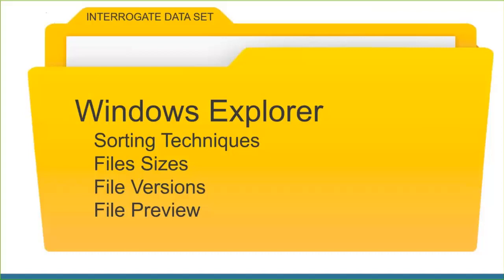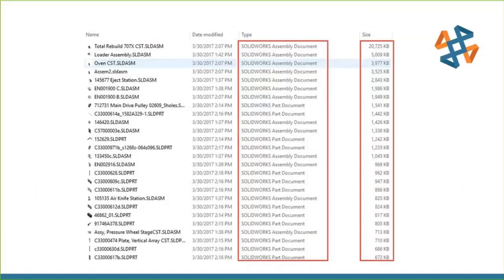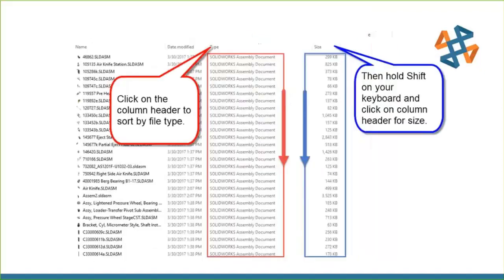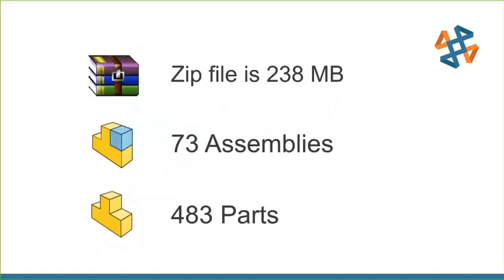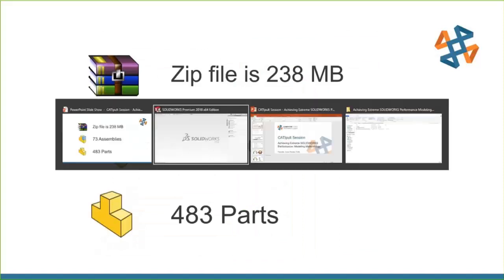Here's the roadmap: first I'll show ways to interrogate your data set — information you can glean without even opening SOLIDWORKS. Then I'll show tips to actually get the file open, identify slow and problematic files, clean up the assembly with clever modeling techniques, open the improved assembly, and discuss hardware improvements and what SOLIDWORKS does during the open process.